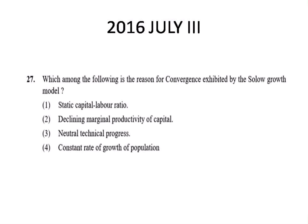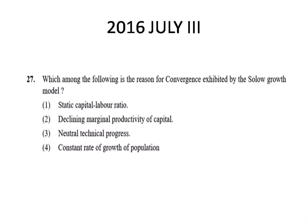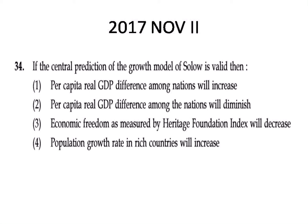Next question from 2016 July Paper 3: Which among the following is the reason for convergence exhibited by the Solow growth model — static capital-output ratio, decreasing marginal returns, neutral returns, or constant rate of growth of population? The correct answer is option 2: decreasing marginal productivity of capital, which is the reason for convergence in the Solow growth model.